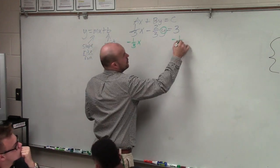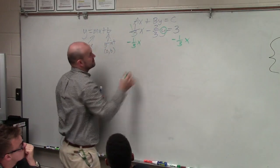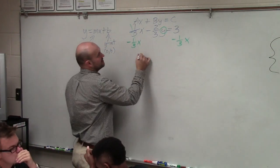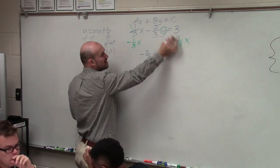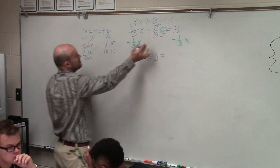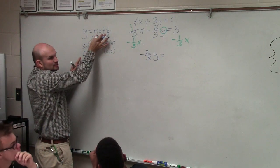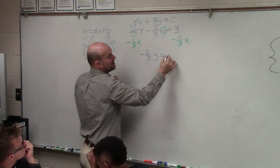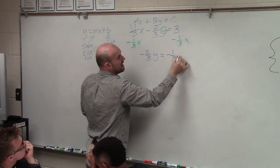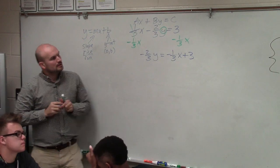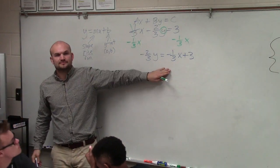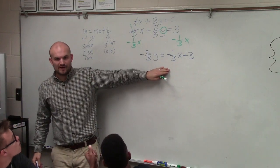So I subtract one-third x on both sides. That now leaves me with negative two-thirds y equals. Now, when we subtract these, remember, these are not like terms, so you can't subtract them. But I want to rewrite this in slope-intercept form. So I'm going to rewrite this as negative one-third x plus 3. Does that make sense? Everybody follow me?